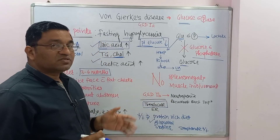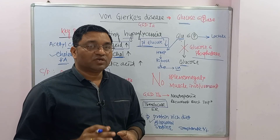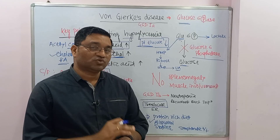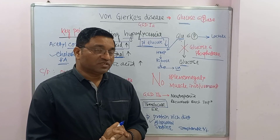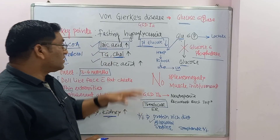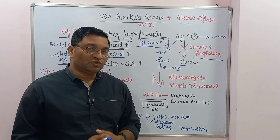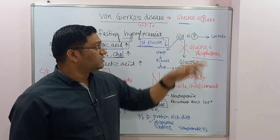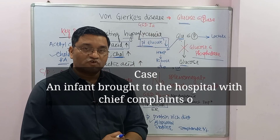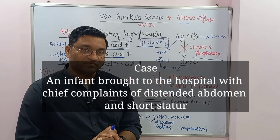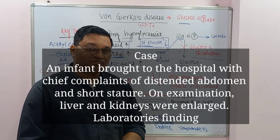The prognosis of Von Gierke's disease is better compared to other glycogen storage disorders. This is all about Von Gierke's disease, which is due to defect in glucose-6-phosphatase. Keep watching. Thank you.